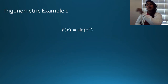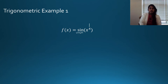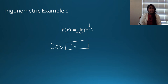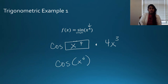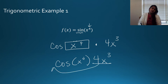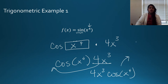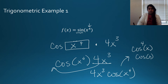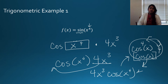Now let's do simple chain rules with trig. For sine of X to the fourth: the outside is sine, the inside is X to the fourth. The derivative of the outside is cosine of the block — I left the inside alone — times the derivative of the inside, which is 4X cubed. Rewritten: 4X cubed times cosine of X to the fourth. Note: cosine of X to the fourth is not the same as cosine to the fourth of X — in one, cosine is to the fourth; in the other, X is to the fourth.